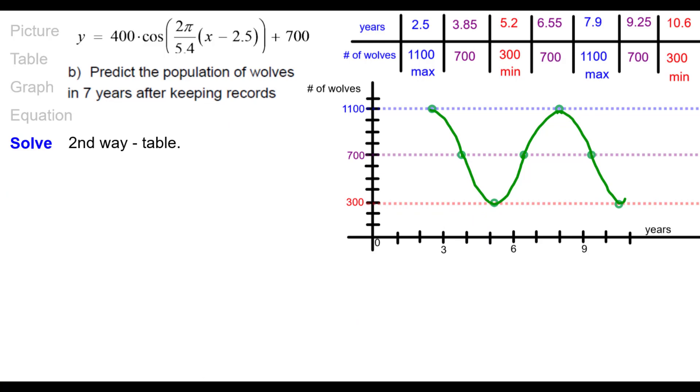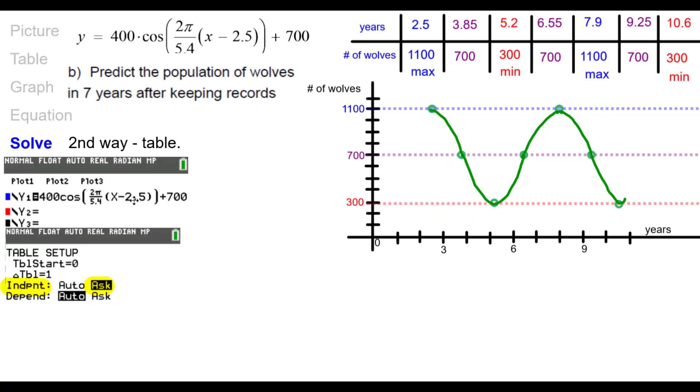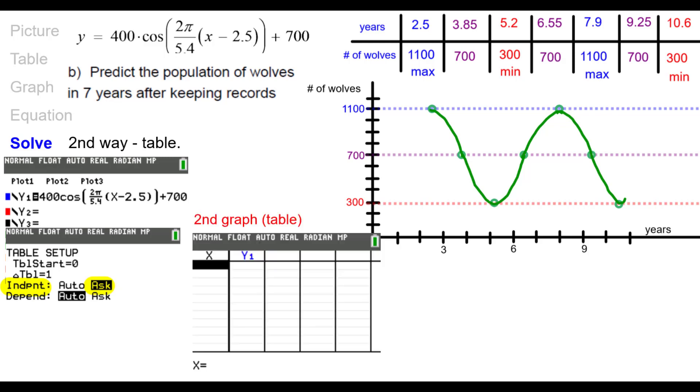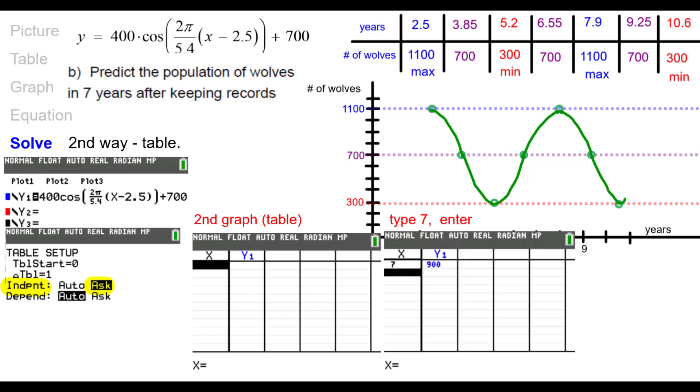Second way is I could use a table instead. Still, I'm going to have this in my y1. But when I go to table setup, I'm going to change the table so that the independent is in ask mode. And that might be something you not have done before. So that when I press second graph and go to table, there's nothing there. It's waiting for me to ask for the numbers I want. So I'm going to go ahead and type in seven and press enter. And you can see I'm getting the same answer, 900 wolves in the table. Same answer, just a different way of getting it. Pause.